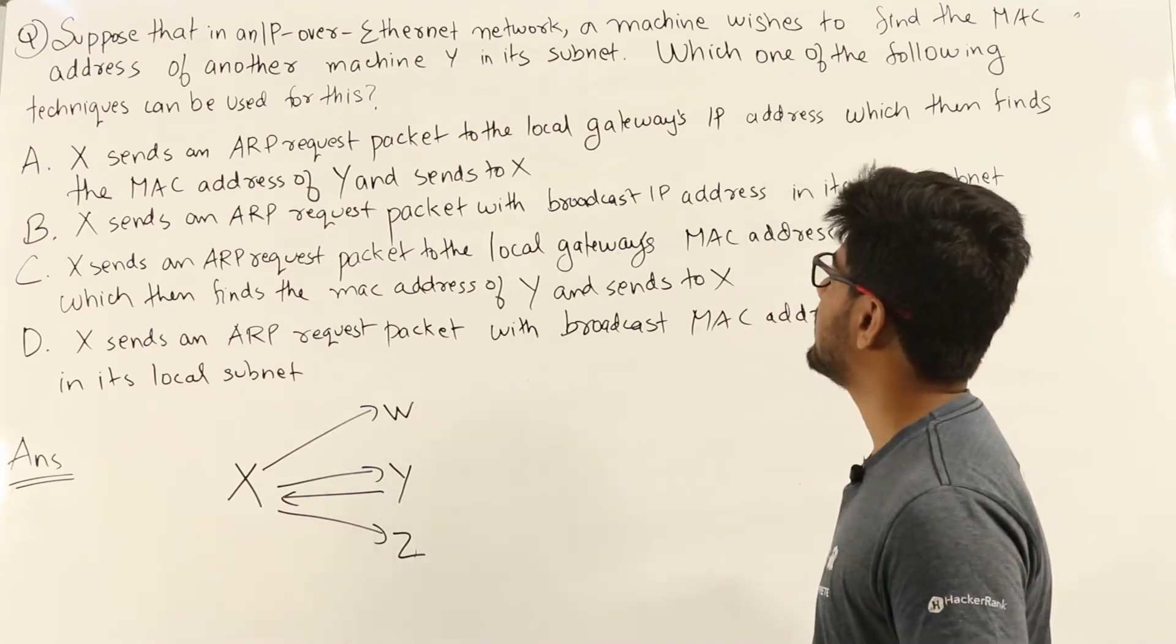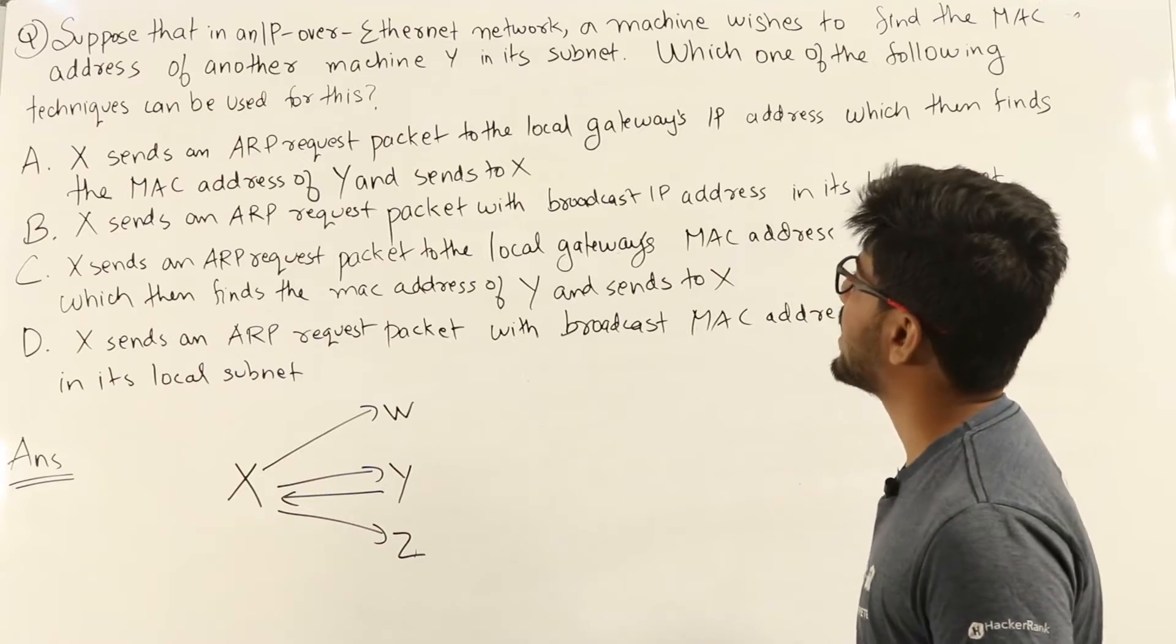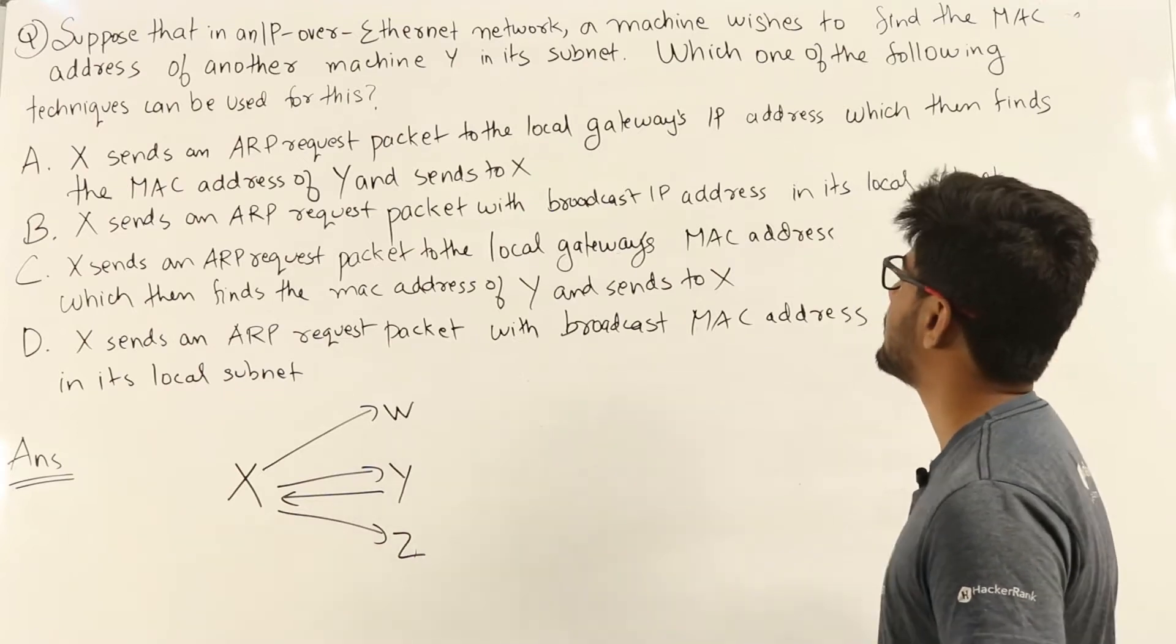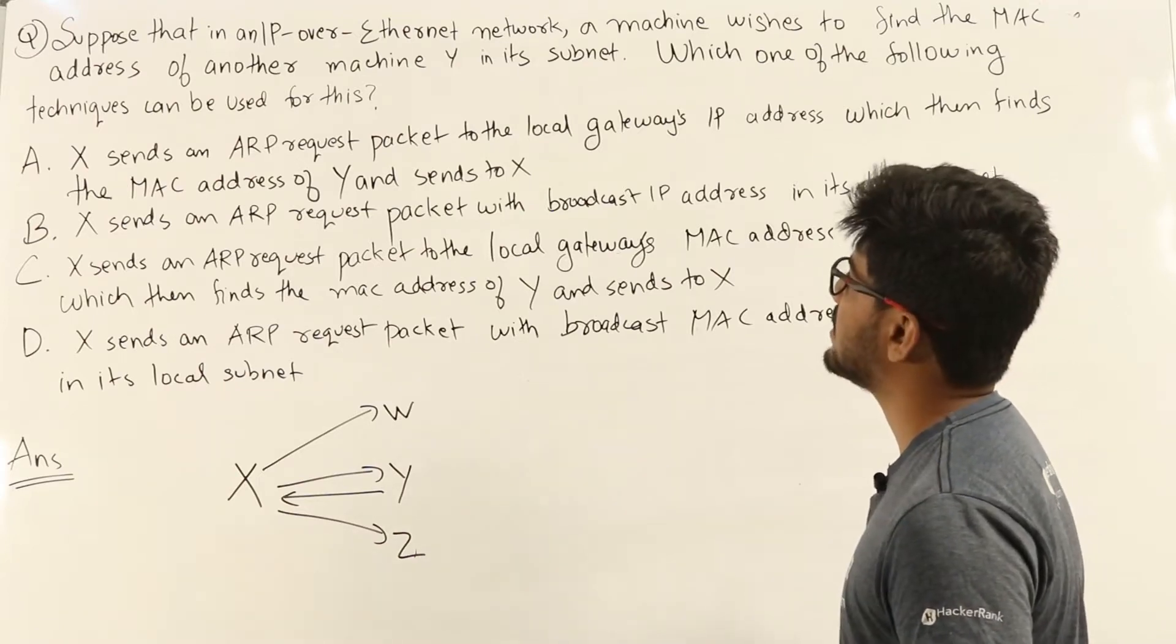Suppose that in an IP over Ethernet network, a machine wishes to find the MAC address of another machine Y in its subnet. Which one of the following techniques can be used for this?